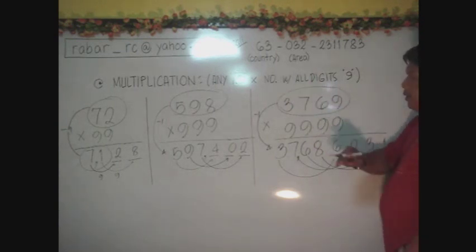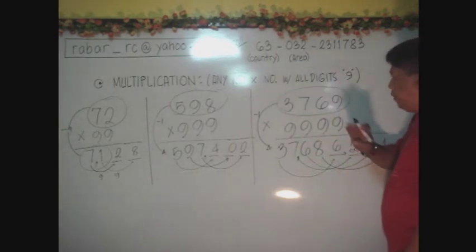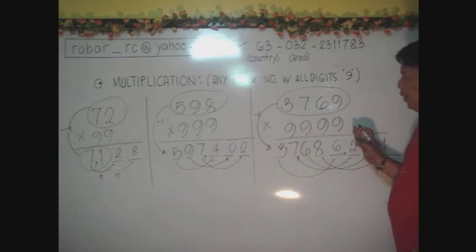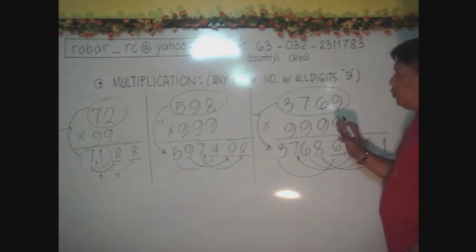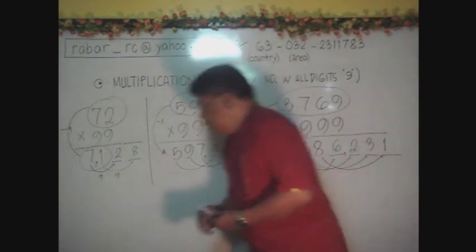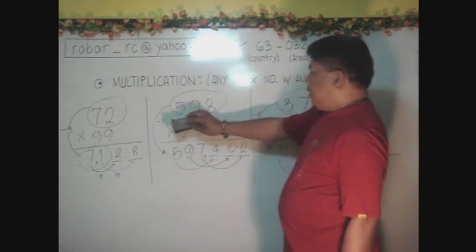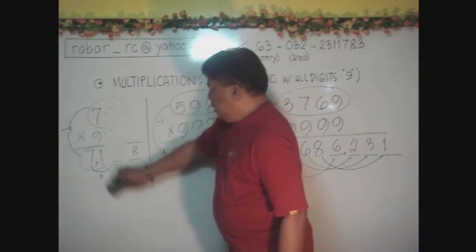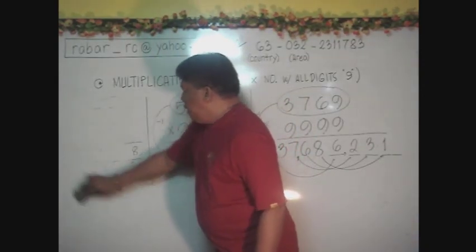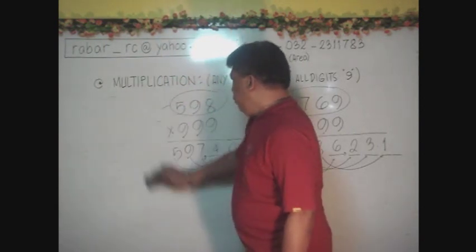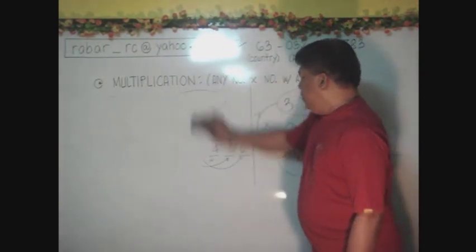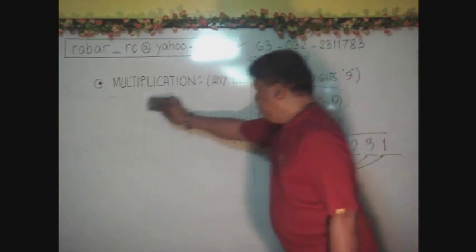From 2 digits, 3 digits, and 4 digits. We can even make this 1 to a bigger number. Like this. I will erase this. And then, we will proceed to a much bigger number.